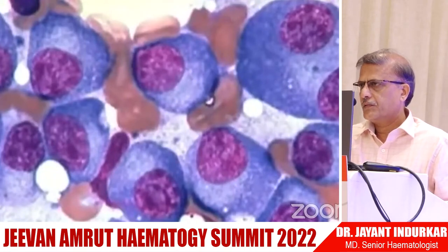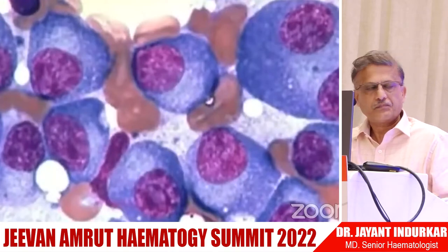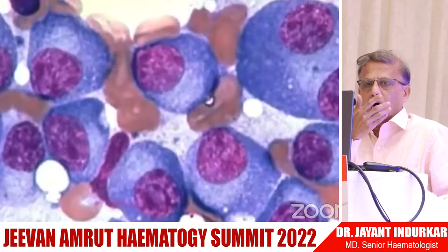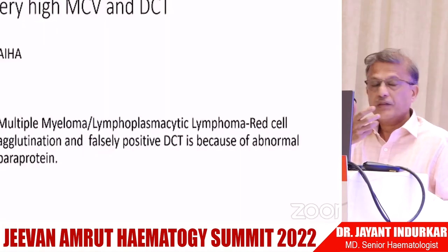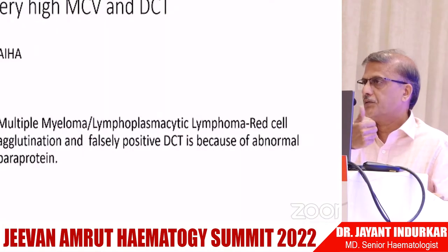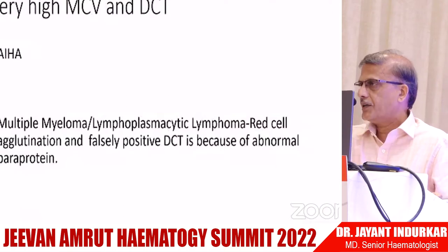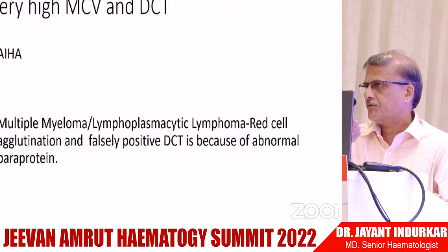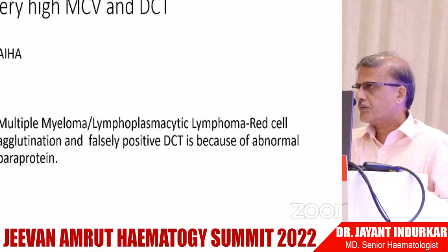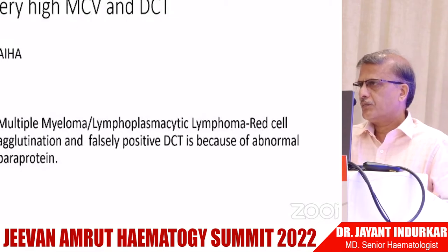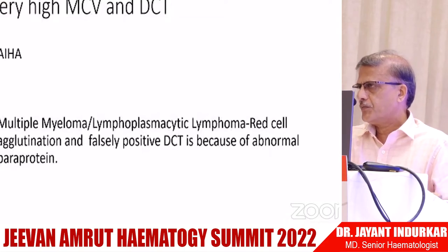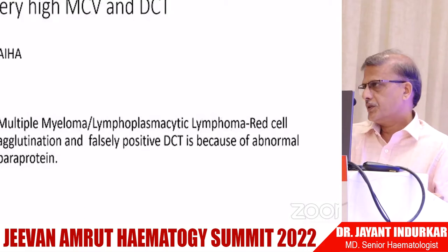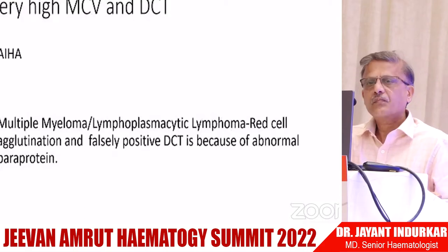Even with all our diagnostic modalities, the basics are still there. Very high MCV and a positive DCT: AIHA is one cause. In adults, multiple myeloma and lymphoplasmacytic lymphoma — Waldenström's macroglobulinemia — are others, because the abnormal paraprotein leads to red cell agglutination, and the DCT can be falsely or truly positive. This must be kept in mind.